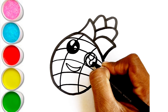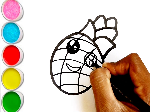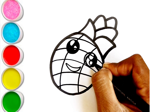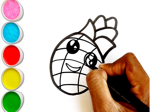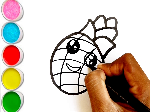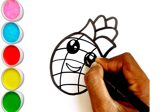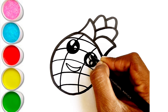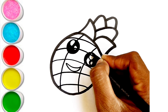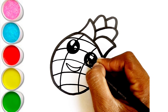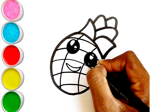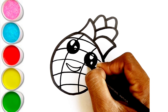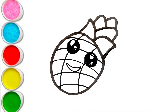A is for Apple. A, A, Apple. B is for Ball. B, B, Ball. C is for Cat. C, C, Cat. D is for Doll. D, D, Doll.